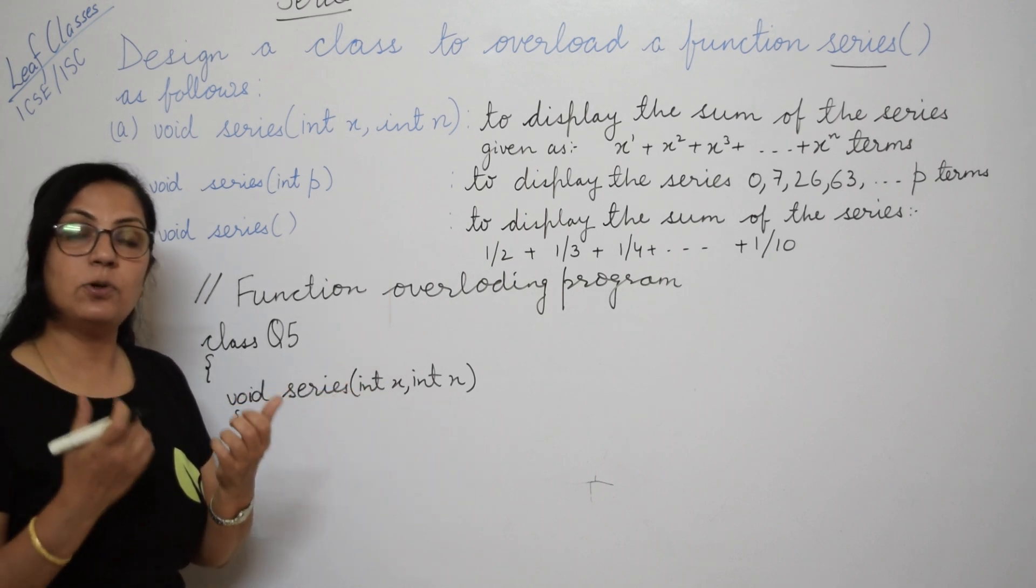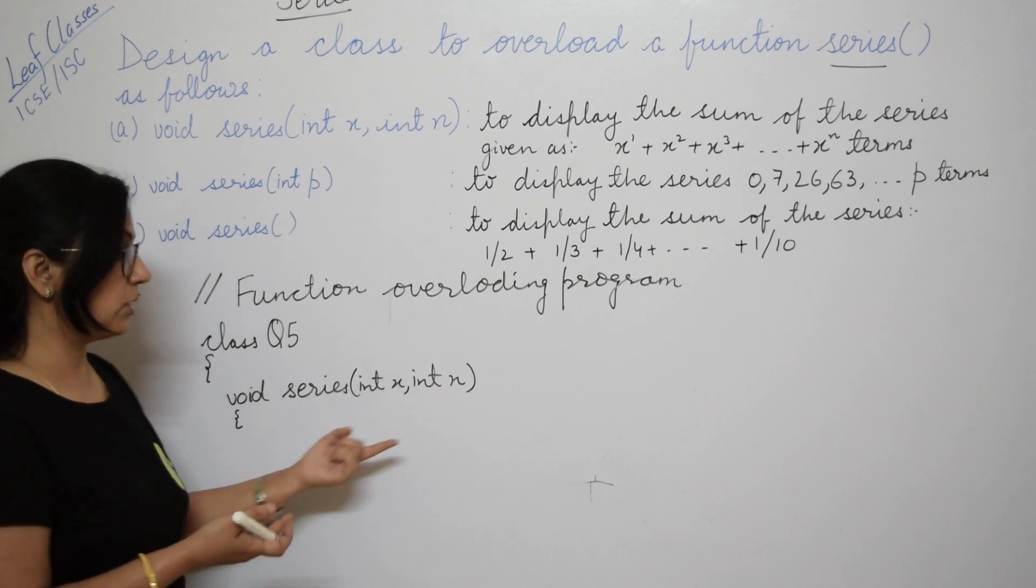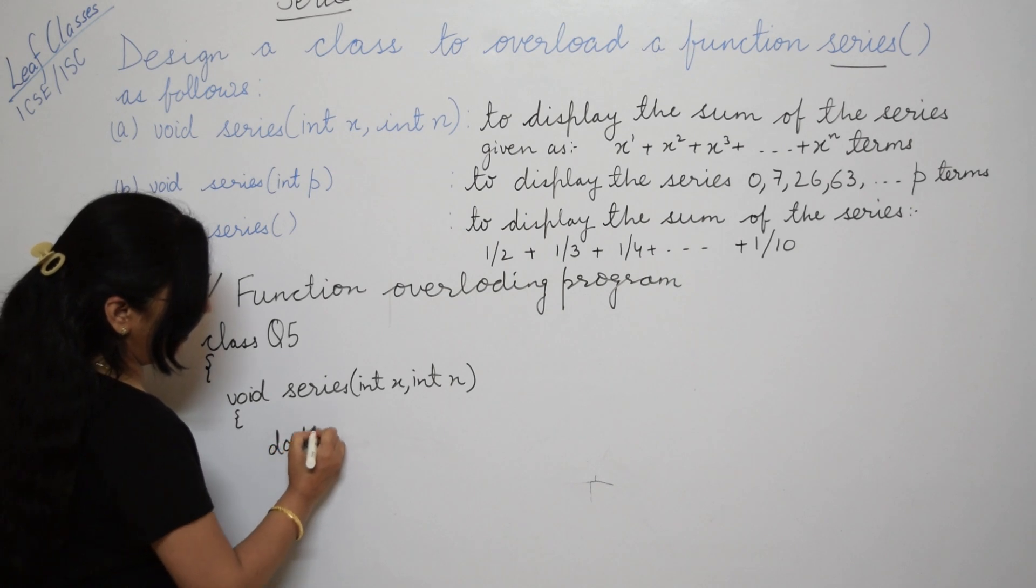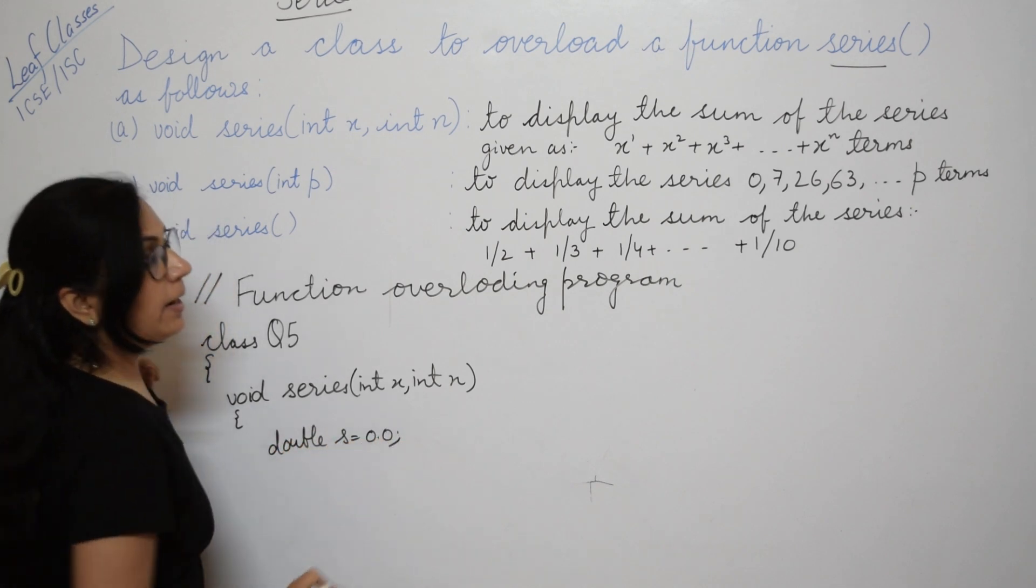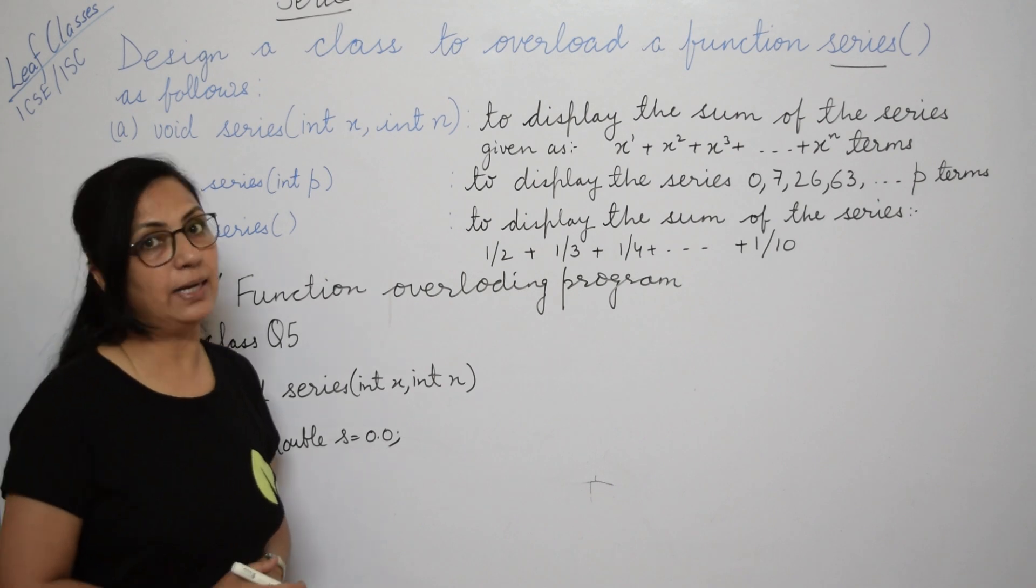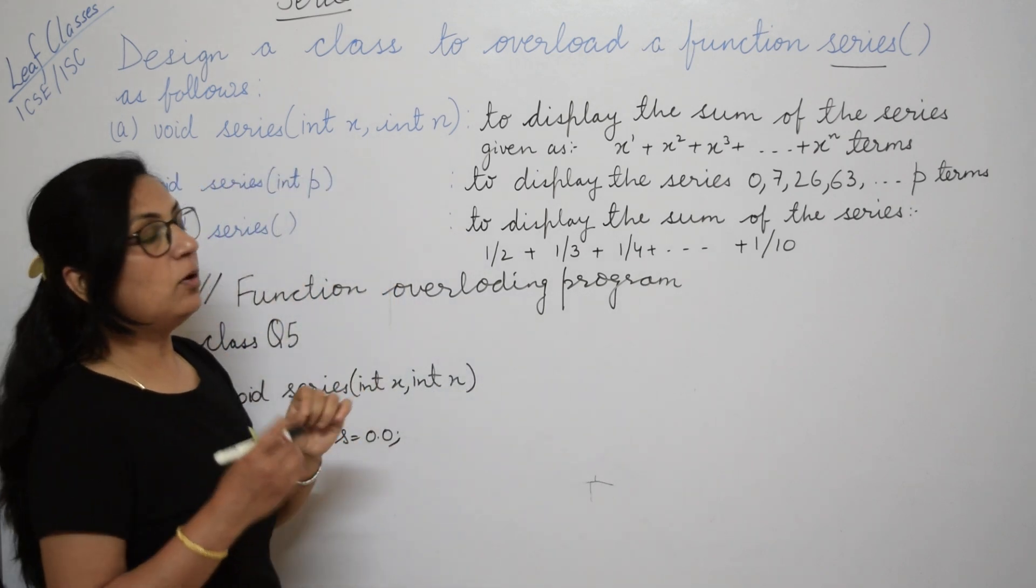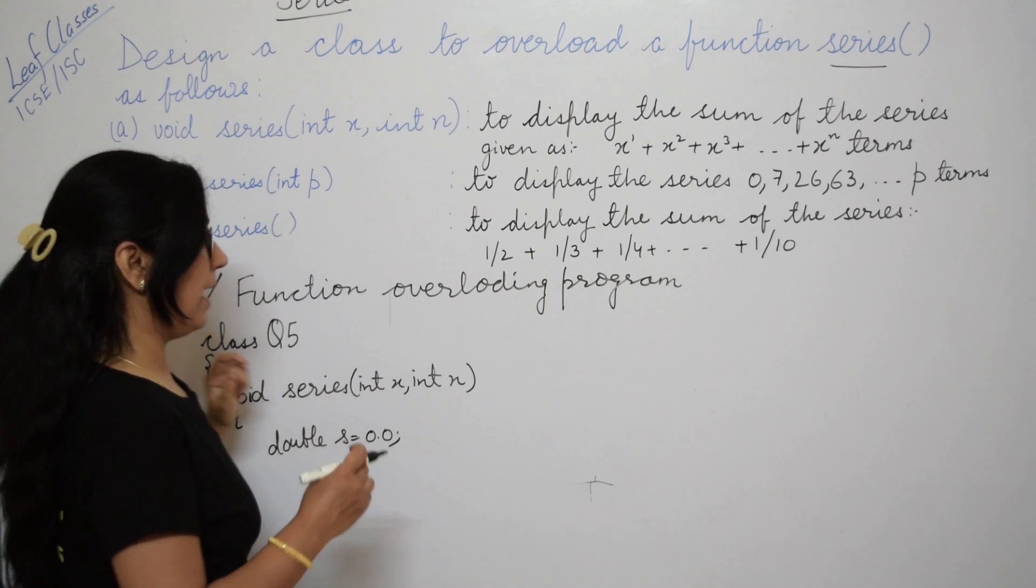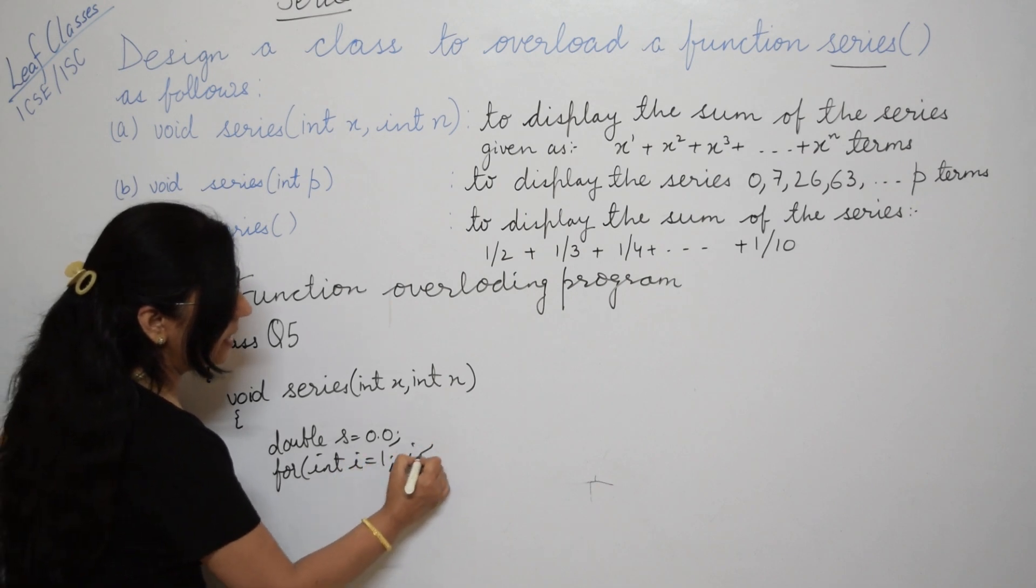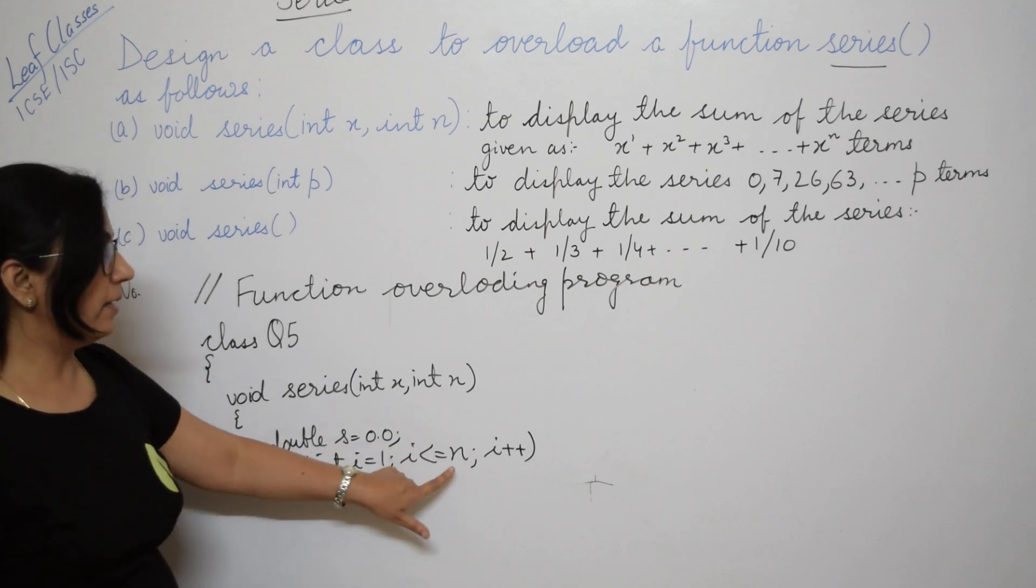X and n are received by this function from wherever it is being called. We need a variable to calculate the sum of the series, so we take a double type variable: double s equals 0.0. If you notice, this is base x and the power value is changing from 1 till n. The looping variable starts from 1 till n as per the question. So we write for int i equals 1, i less than equals to n, i plus plus.